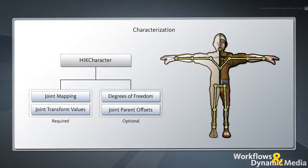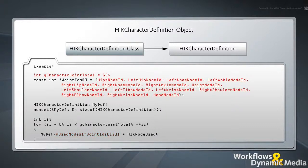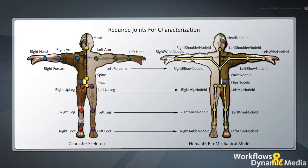In addition, the HIKCharacter object can include other optional values like degrees of freedom and parent offsets for each joint. We'll skip these for this basic initialization, since they are not mandatory and omitting them will not affect the final result. In order to create an HIKCharacter, you must first create an instance of the HIKCharacterDefinition class. The HIKCharacterDefinition acts as a blueprint that identifies a set of HIK node IDs corresponding to the joints used in your character. Those HumanIK node IDs are stored in an mUsedNodes array for easy access. The HIKCharacterDefinition must contain at least the 15 nodes required by HumanIK, which correspond to the main joints in your character's skeleton and are essential to complete the characterization. Other nodes such as fingers, toes, and roll nodes are optional and do not affect the characterization to the same degree.